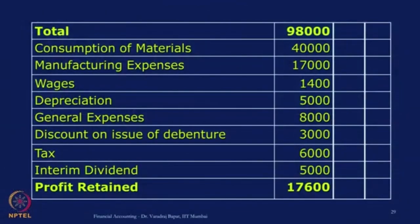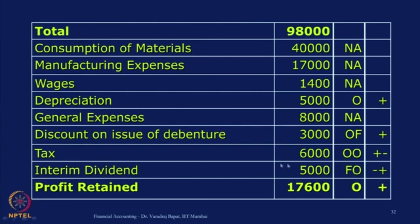All expense items in P&L — day-to-day items like consumption, manufacturing, wages, and general expenses are N/A. But depreciation is a non-cash expense, so O plus. Discount on issue of debentures is O/F plus. Taxation is O/O because it will come under operating items twice — plus and minus. Interim dividend is F/O, plus and minus. If you have not understood it, please read it 2-3 times; it is very important. Once that is done, the remaining job is simple.